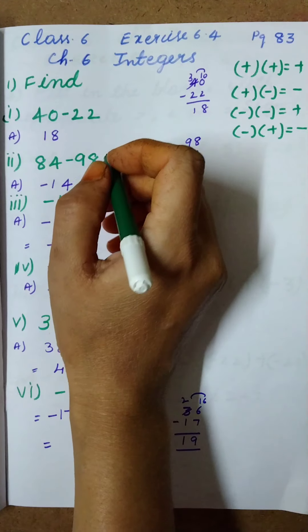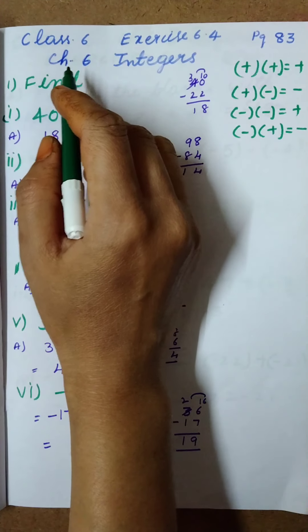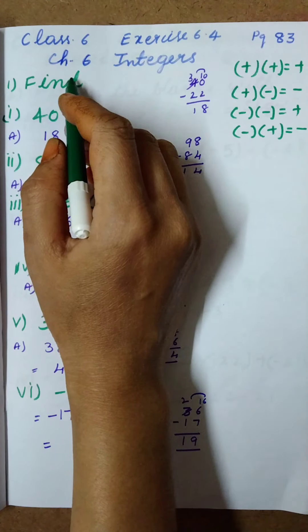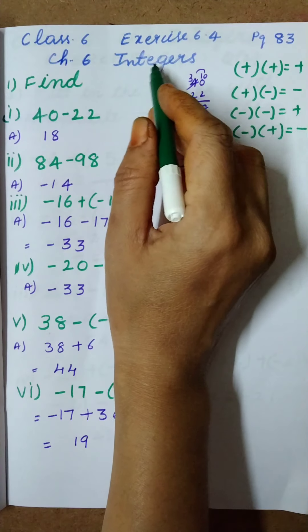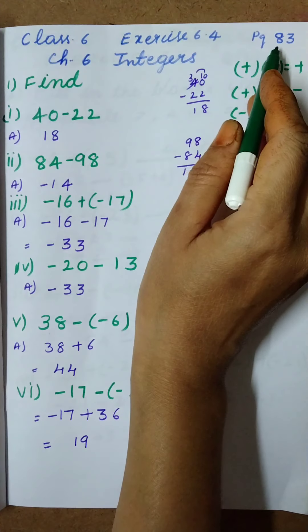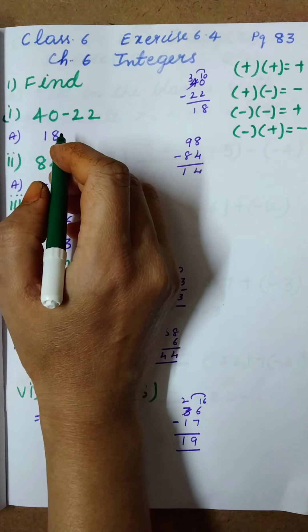Good morning children. Today I am going to explain class 6, chapter 6, exercise 6.4 — integers, page number 83, question number 1.